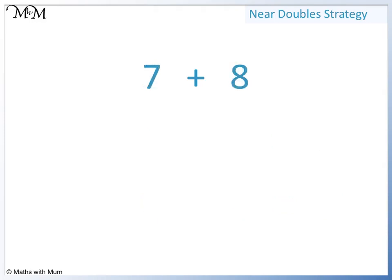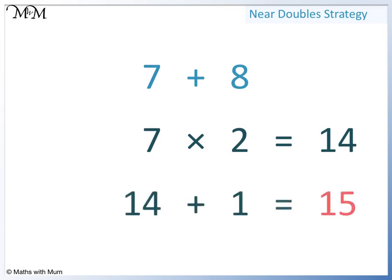Here we have 7 plus 8. 7 and 8 are very close together. To work this out, first we double 7. 7 times 2 equals 14. 8 is 1 more than 7, so we add 1. 14 plus 1 equals 15.